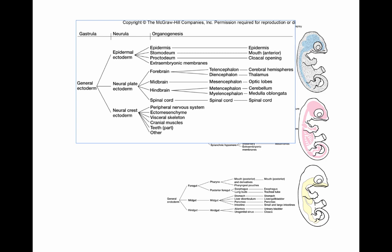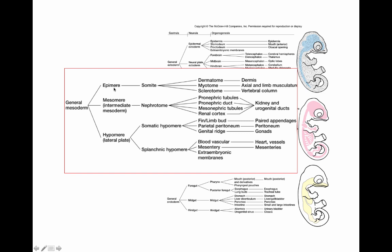The mesoderm comes in three basic types. Early in development these are referred to as the epimere, mesomere, and hypomere. The epimere gives rise to somites, which divide into three subdivisions — the dermatome, myotome, and sclerotome — giving rise to the dermis, the segmental body muscles including axial and limb musculature, and the vertebral column.